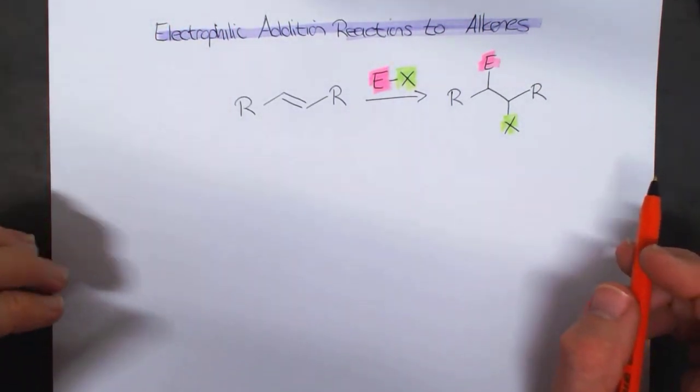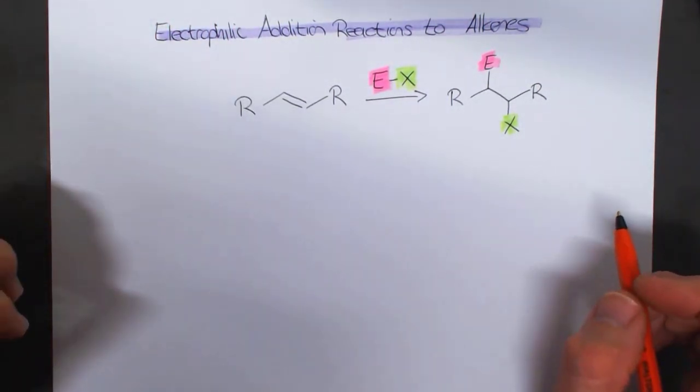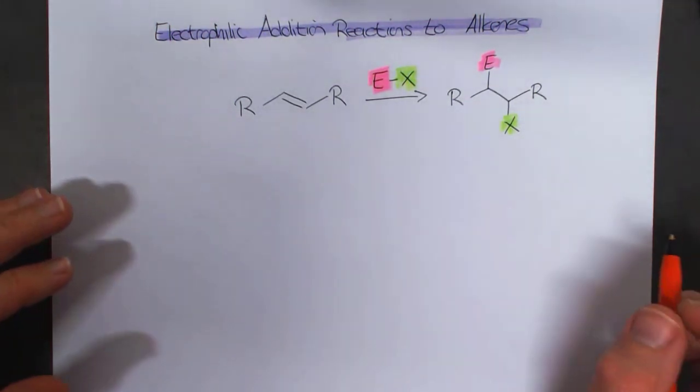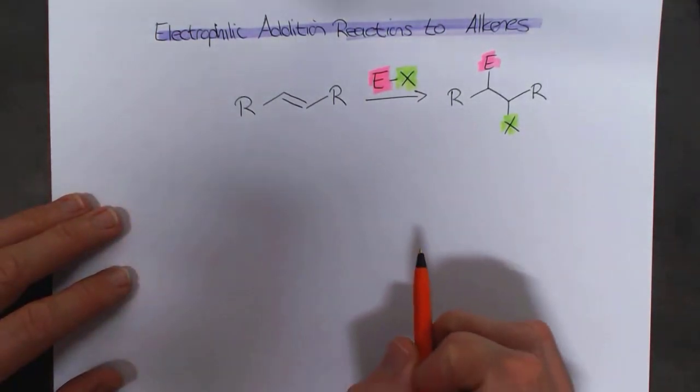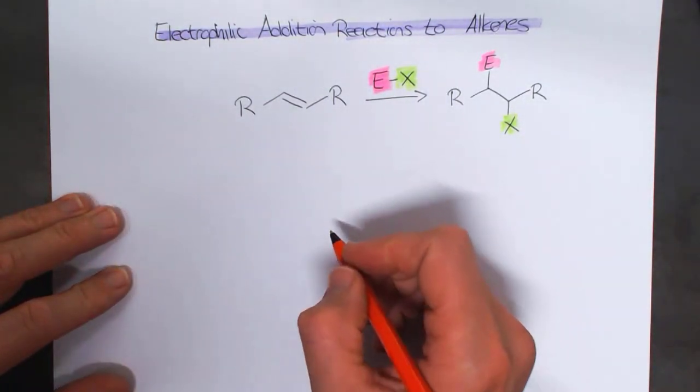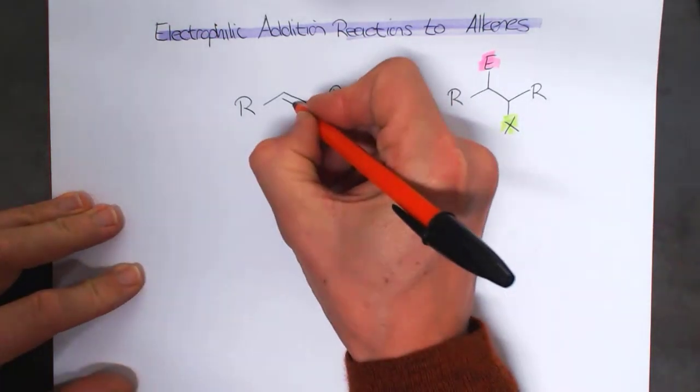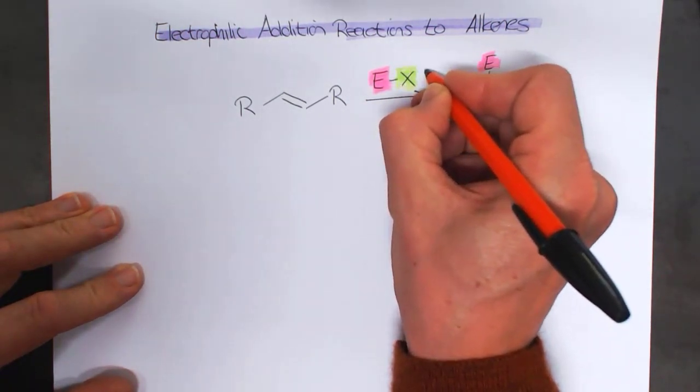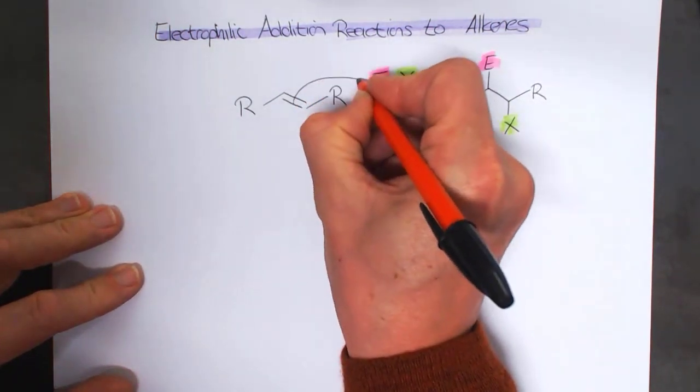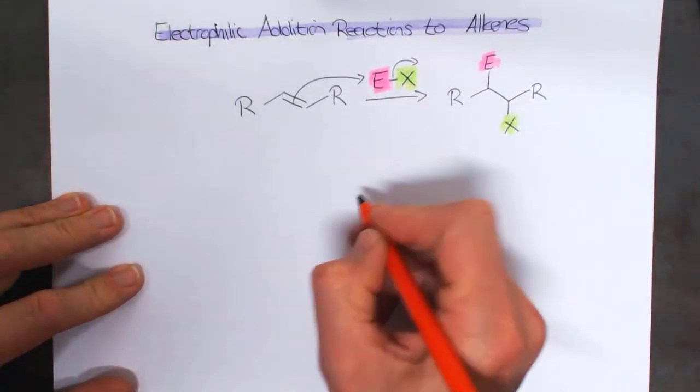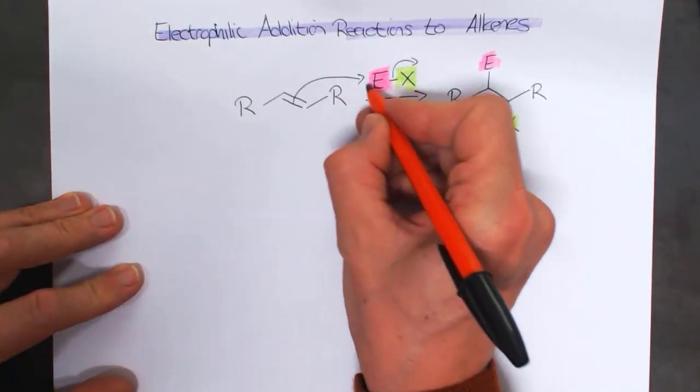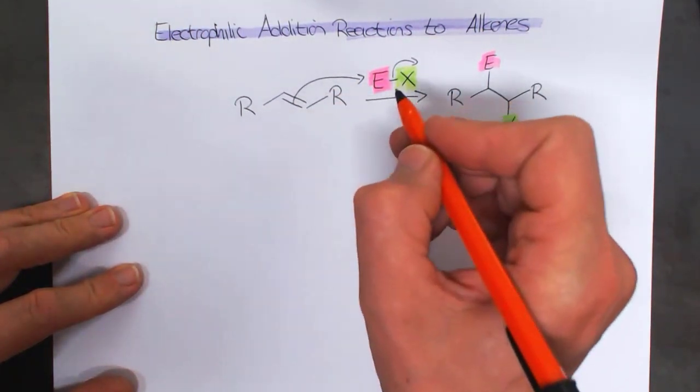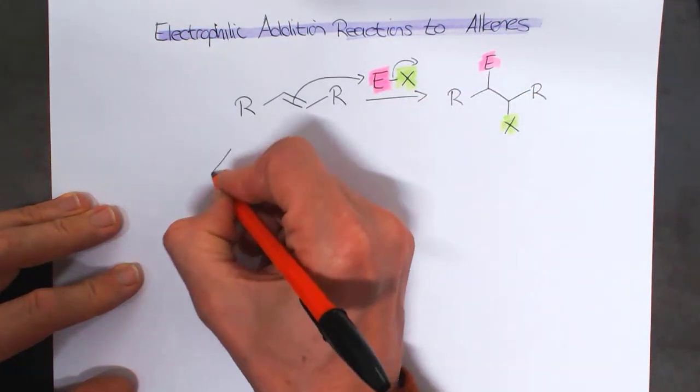So I said there are three different types of mechanisms that might take place. Let's look at one of the first and most common type of mechanisms, one that you've probably seen in undergrad. In this mechanism, we are going to take the pi bond and we're going to add it to our electrophile and kick out our leaving group. So this electrophile is going to bond to this molecule over here.